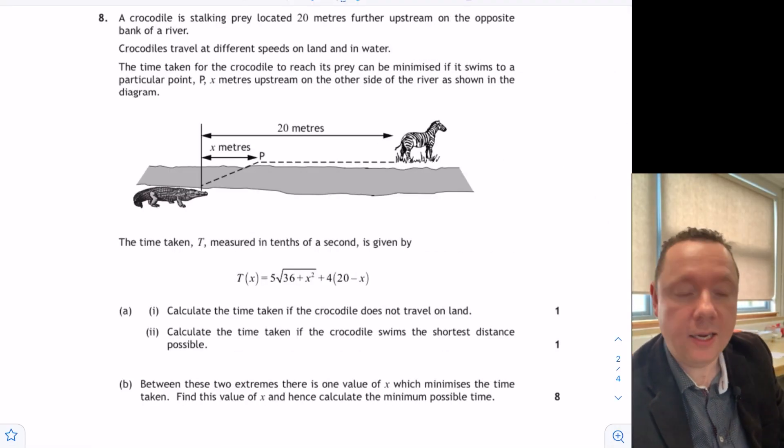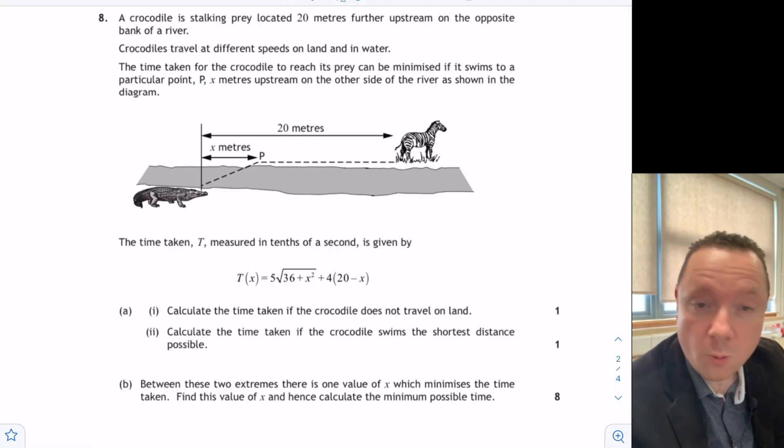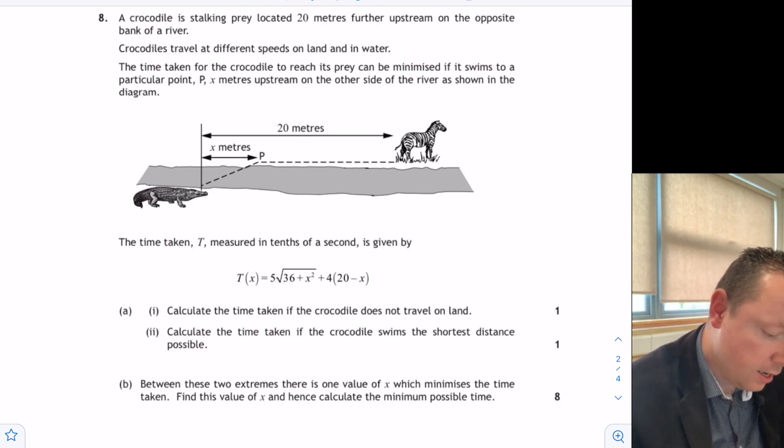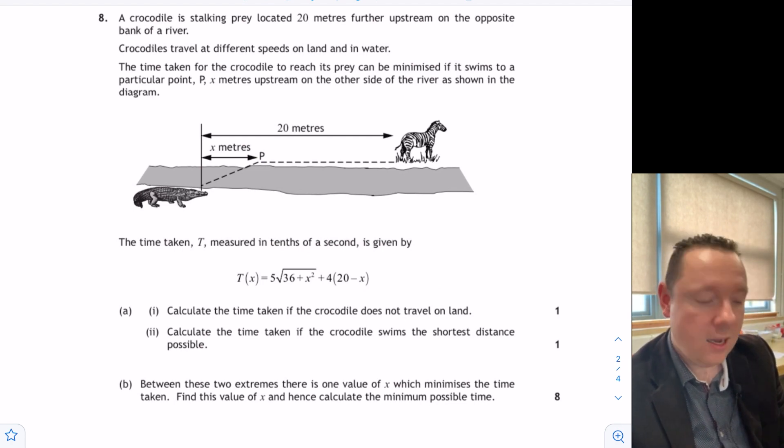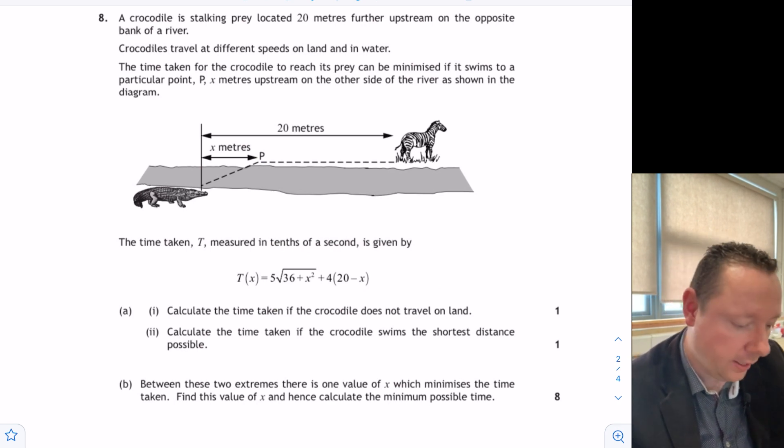A crocodile is stalking prey located 20 meters further upstream on the opposite bank of a river. Crocodiles travel at different speeds on land and water. The time taken for the crocodile to reach its prey is minimized if it swims to a particular point p meters upstream on the other side of the river as shown. It gives you a formula for the time taken in tenths of a second. Remember x is this horizontal distance here. Part A says calculate the time taken if the crocodile does not travel on land. The context of the question made this one difficult and people couldn't quite understand what's it asking me here.